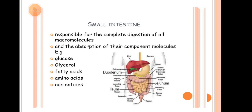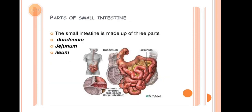Next is the Small Intestine, responsible for the complete digestion of all macromolecules. After the stomach, food first passes into the small intestine, where all micro-molecules are digested and the absorption process begins. The component molecules absorbed here include glucose, glycerol, fatty acids, amino acids, and nucleotides.